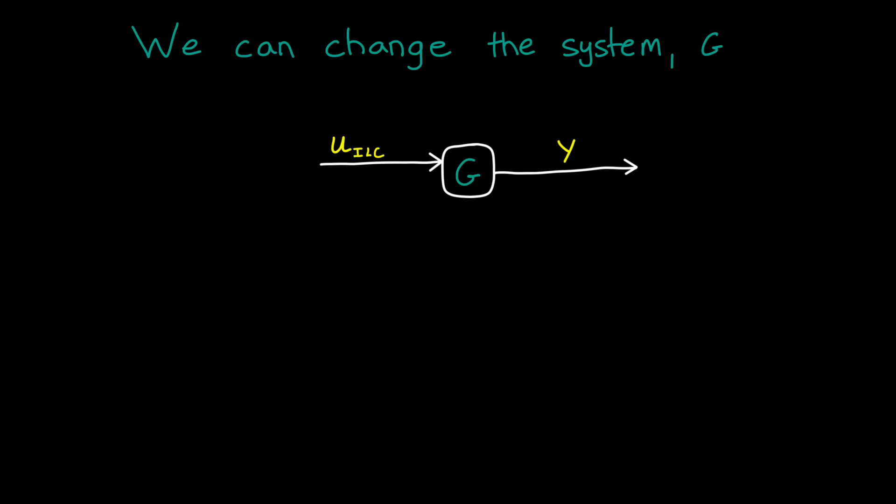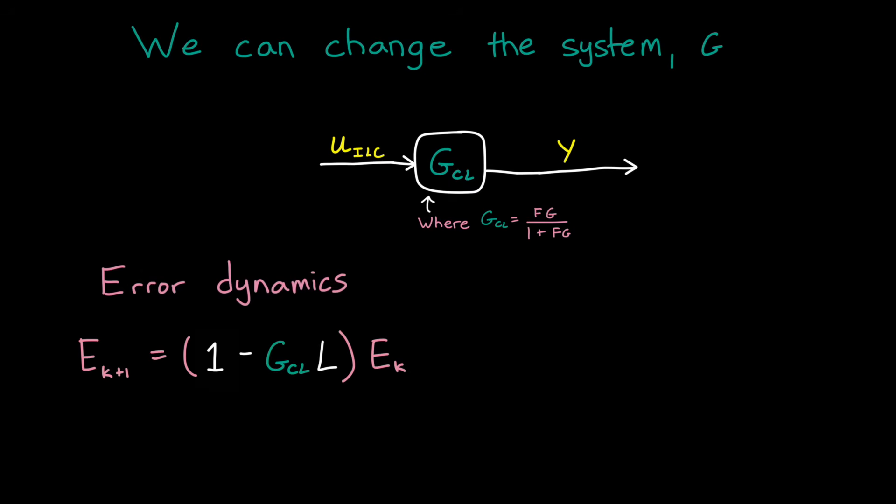Remember, this is our open loop ILC block diagram. But instead of operating the system completely open loop, we could design a feedback controller in parallel to the ILC controller. So now instead of the open loop system g, the error dynamics are a function of the closed loop system.